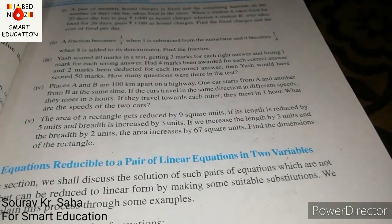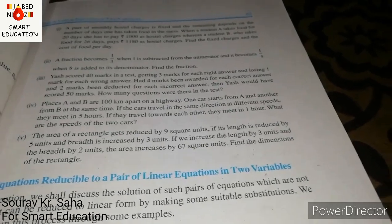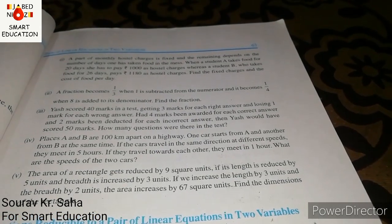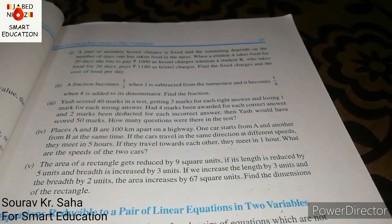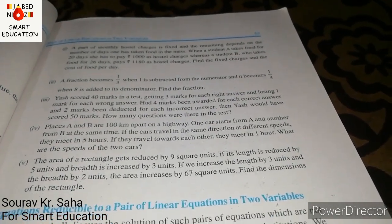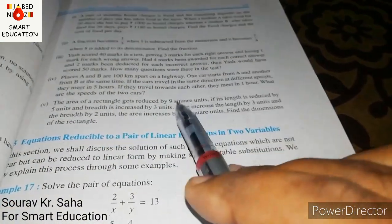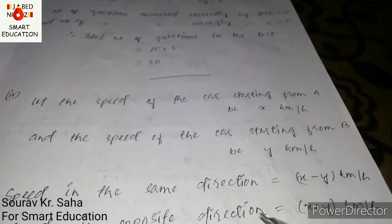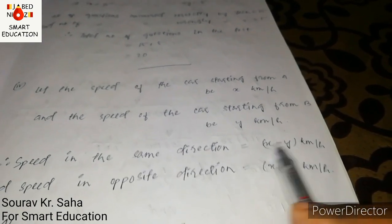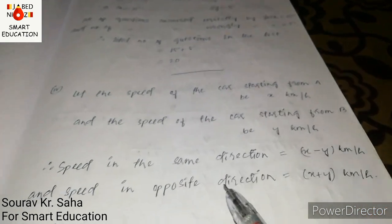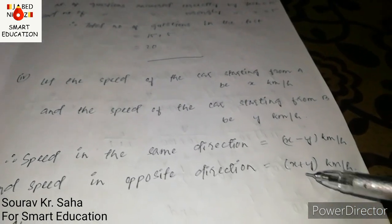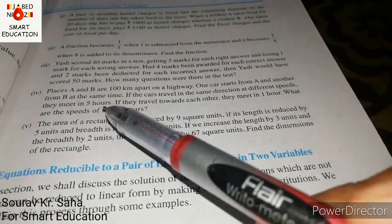Question number 4: Places A and B are 100 km apart on a highway. One car starts from A and another from B at the same time. If the cars travel in the same direction at different speeds, they meet in 5 hours. If they travel towards each other, they meet in 1 hour. What are the speeds of the two cars? Let the speed of the car starting from A be x km per hour and the speed of the car starting from B be y km per hour.